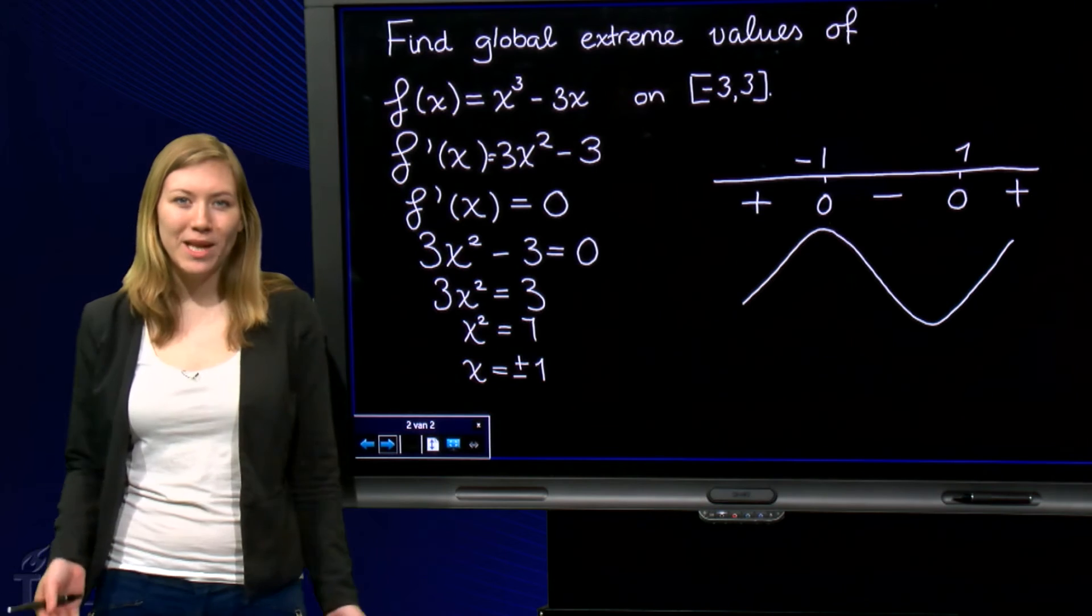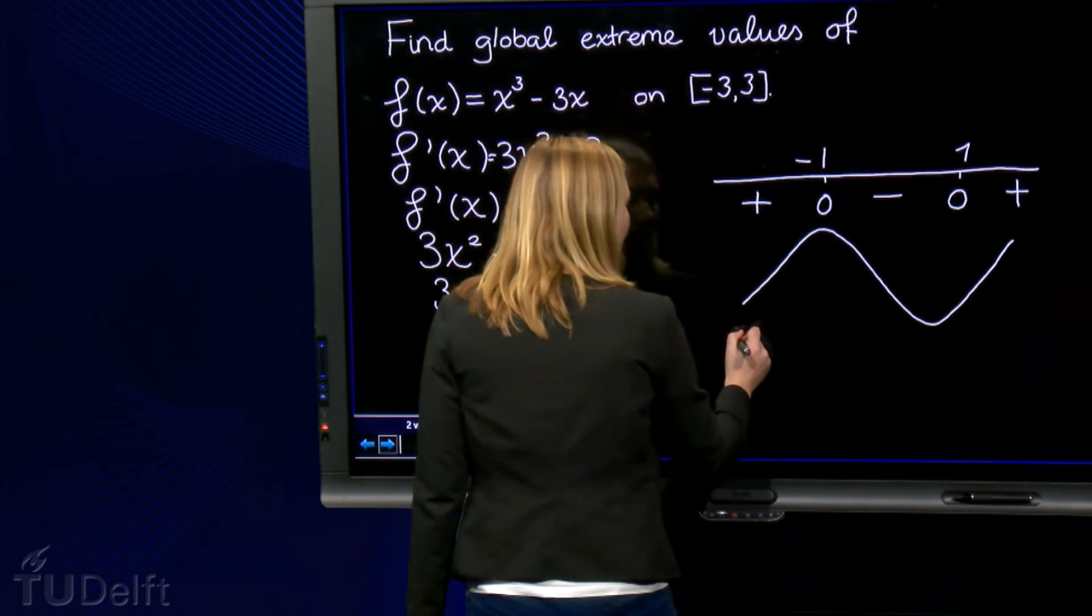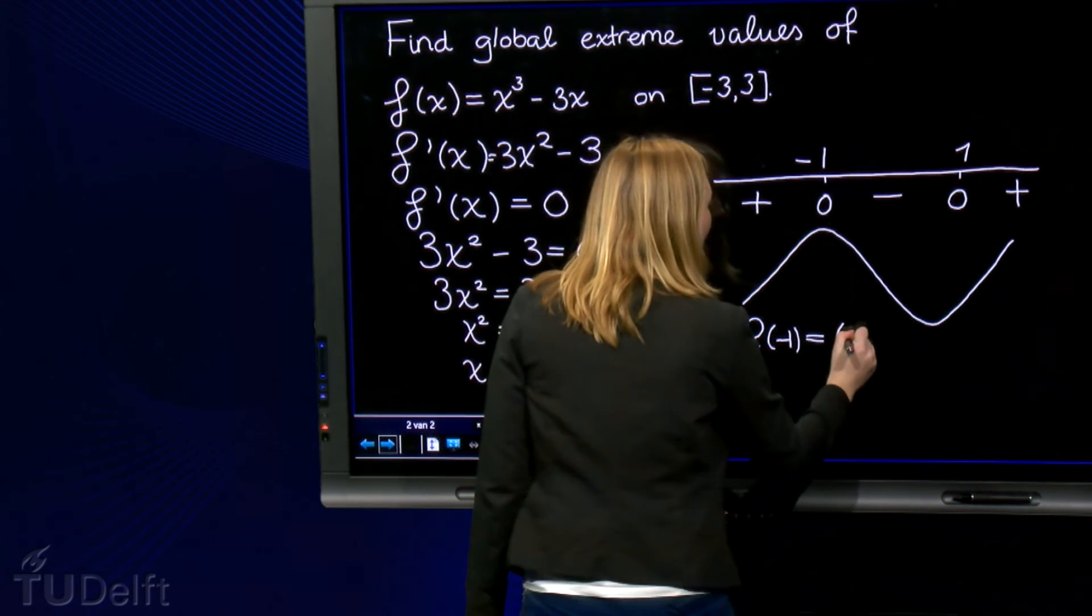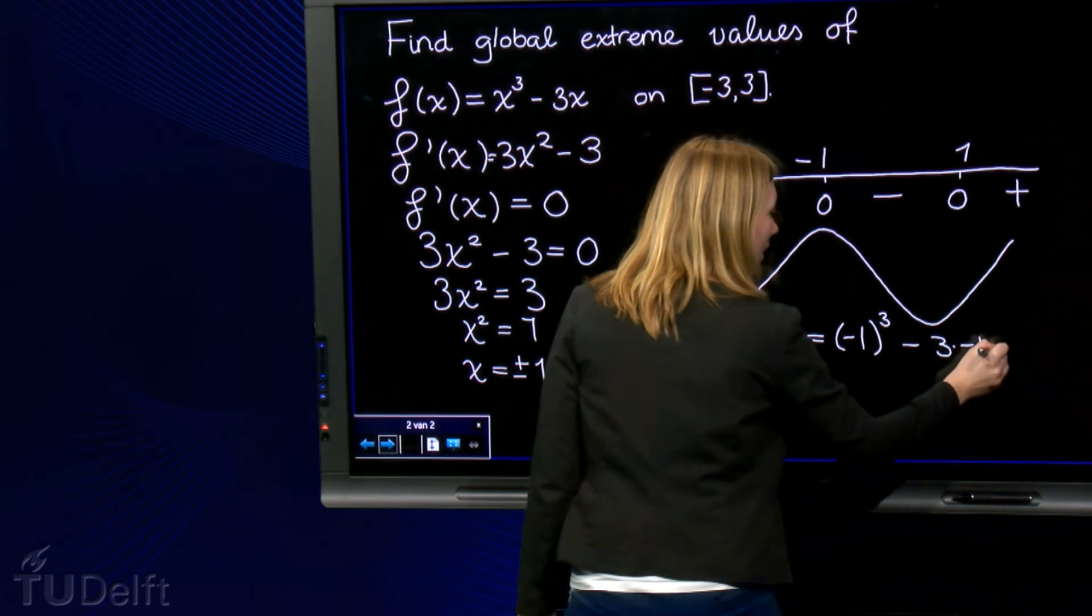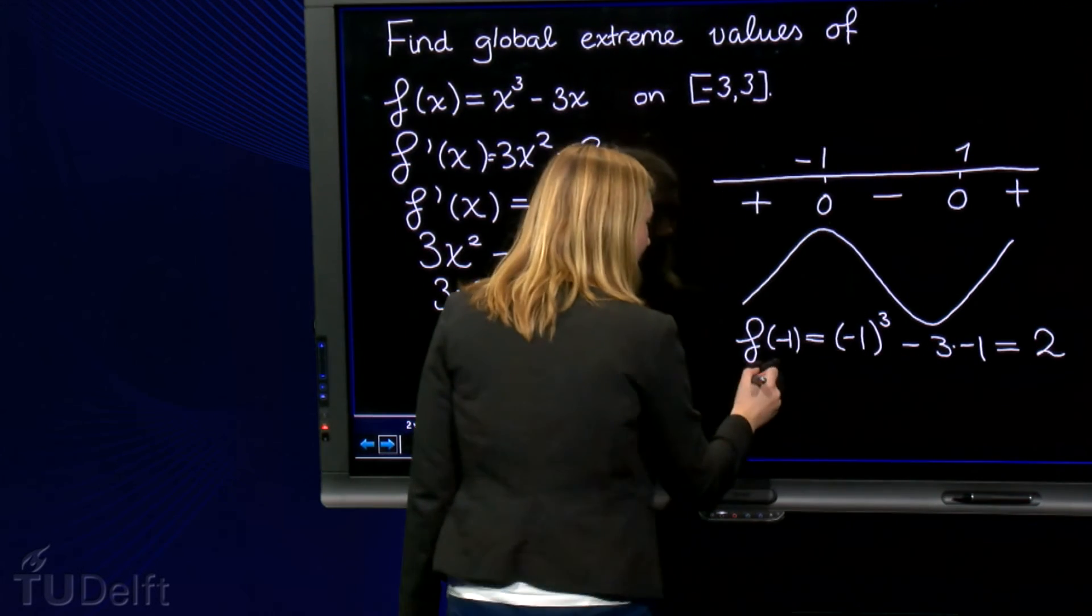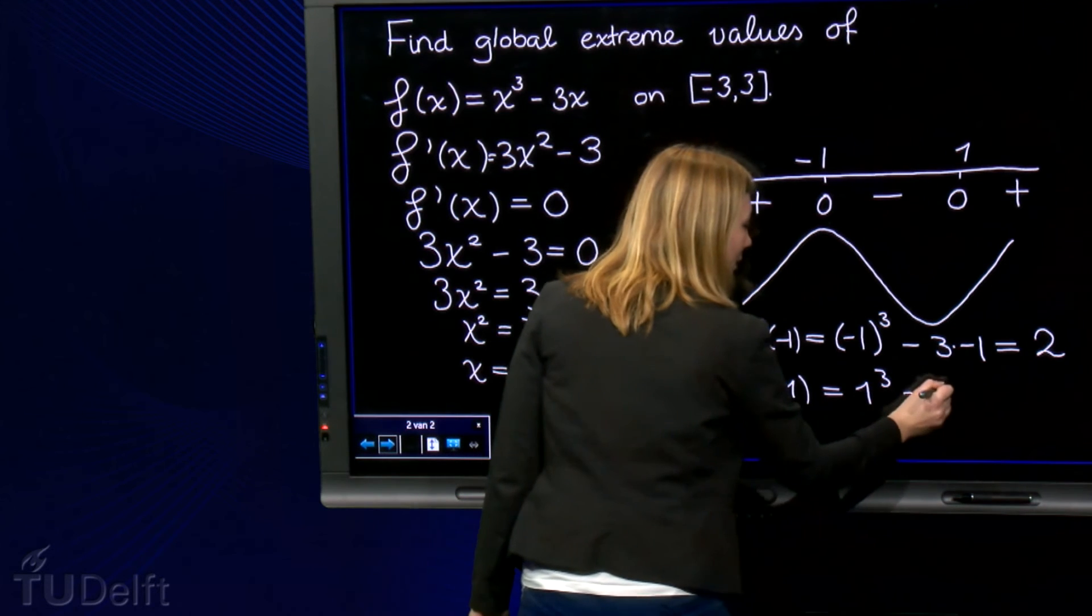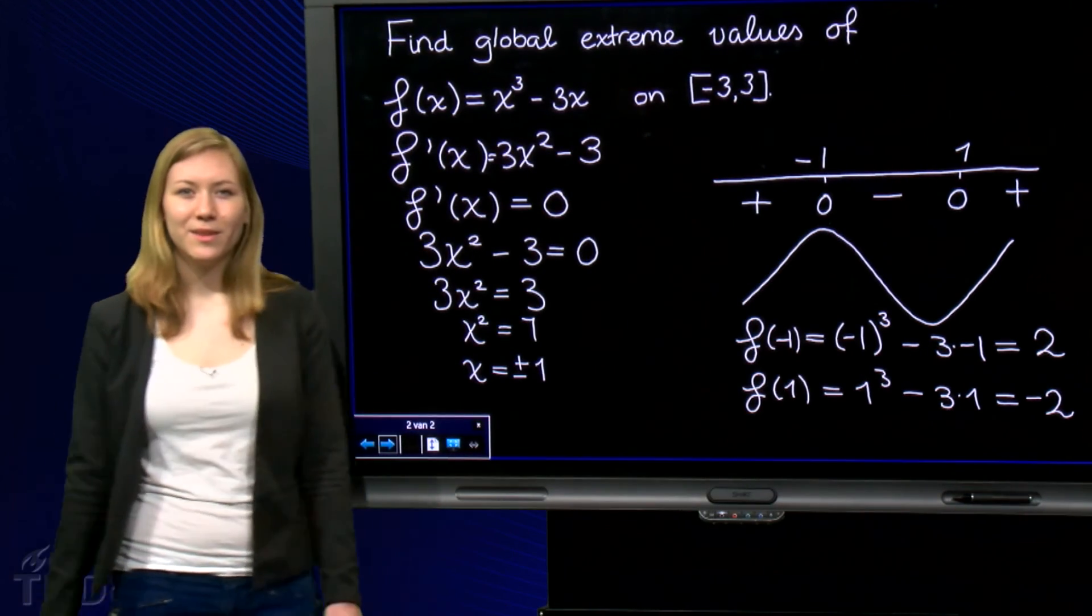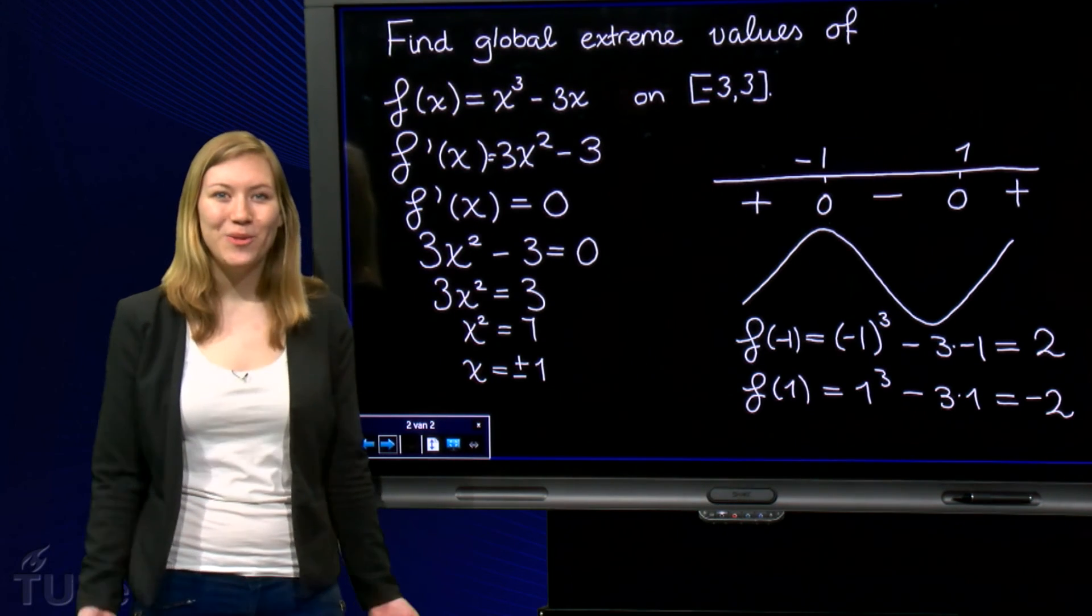To find our extreme values, we now only need to compute the function values. f of minus 1 equals minus 1 cubed minus 3 times minus 1, which equals 2. f of 1 equals 1 cubed minus 3 times 1 equals minus 2. So our maximum value is 2 and our minimum value is minus 2.